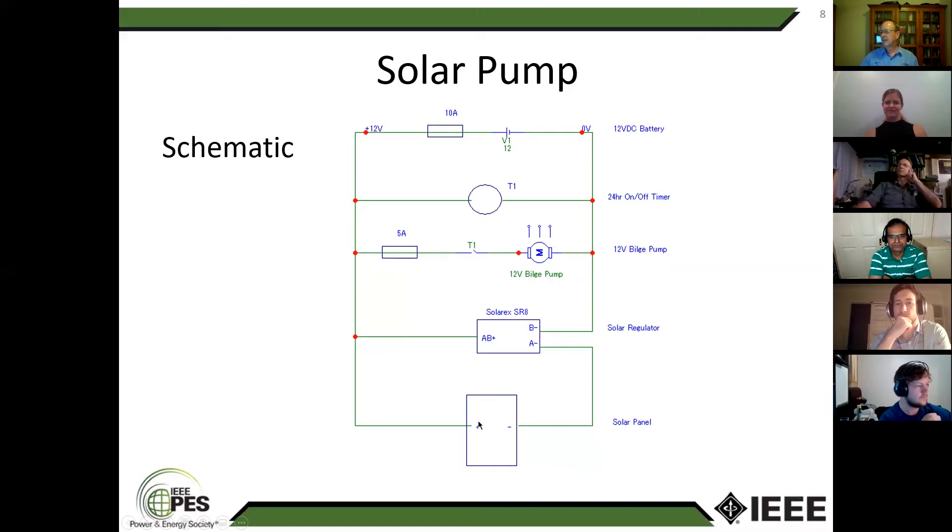The solar cell charges the battery via the same circuit and via this Solarex SR8 regulator. This is a very old, not very sophisticated charger. All it does is monitor the voltage across the battery, and when the battery voltage gets to the state that it determines as needing charge, it connects the A minus and B minus terminals so the solar cell charges straight into the battery. Once it gets fully charged, the solar regulator drops off the solar cell. So it's just an on-off type control.